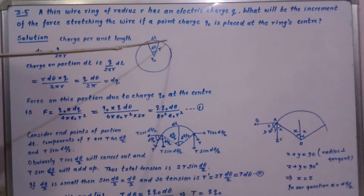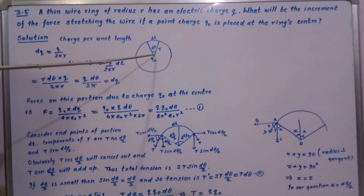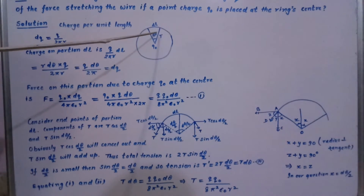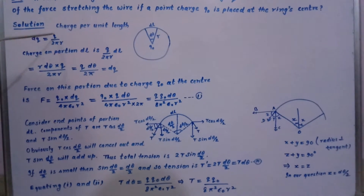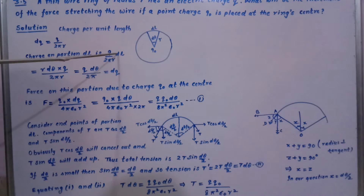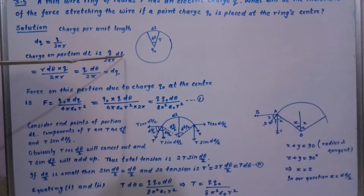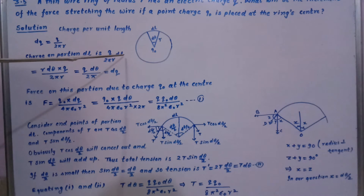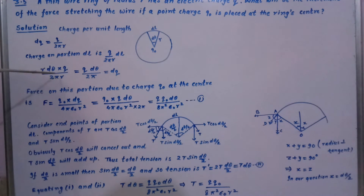This is the ring. Total charge Q is distributed along its circumference, and charge Q0 is placed at the center. The angle subtended is dθ. We consider a small portion DL of the ring with radius R. Charge per unit length equals Q divided by 2πR. So charge on portion DL equals (Q / 2πR) × DL. Since arc equals radius times angle, DL = R dθ, giving charge dQ = Q dθ / 2π.